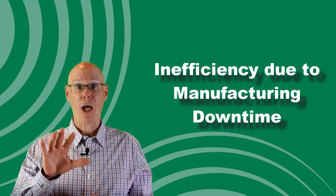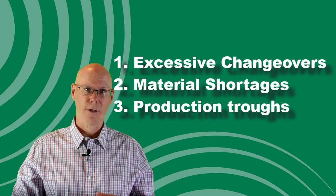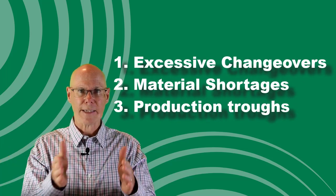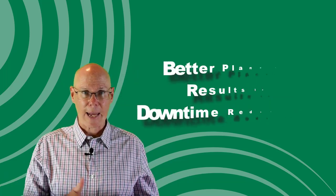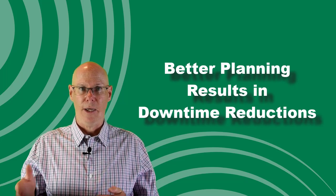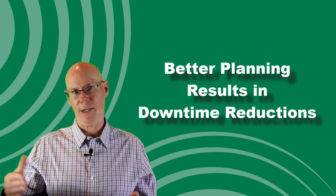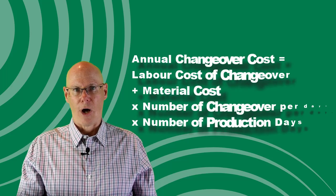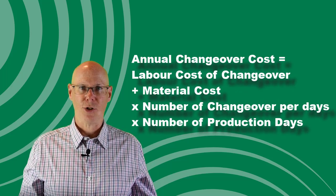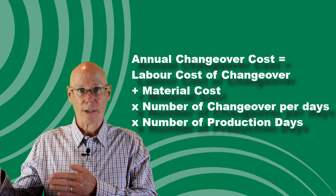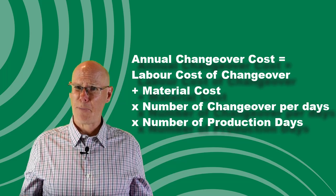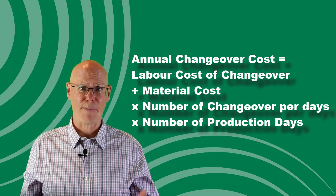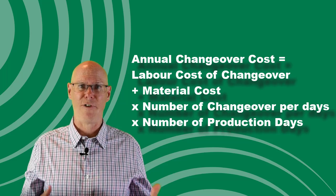Downtime can be caused by various factors: excessive changeovers, material shortages, or production troughs where there isn't enough demand to fill your facility. Through better planning, these downtimes can be reduced. If you have the data, it's helpful to divide it between these different causes. Annual changeover costs can be calculated by looking at the labor cost of changeover plus the material cost, multiplied by the number of changeovers per day times the number of production days. Through better planning, if you can reduce these by 10 to 15 percent, you can calculate the plant efficiency saving.